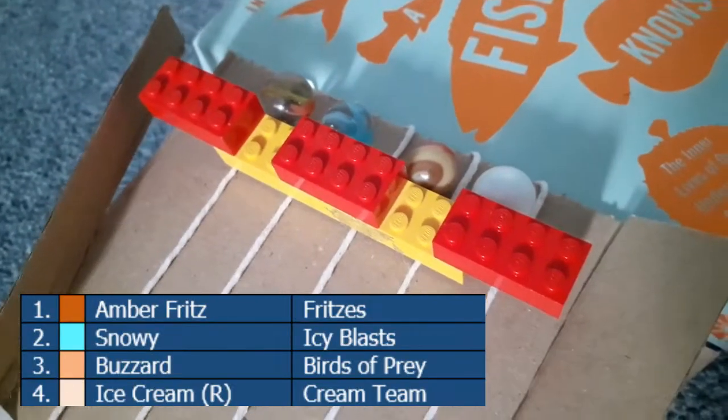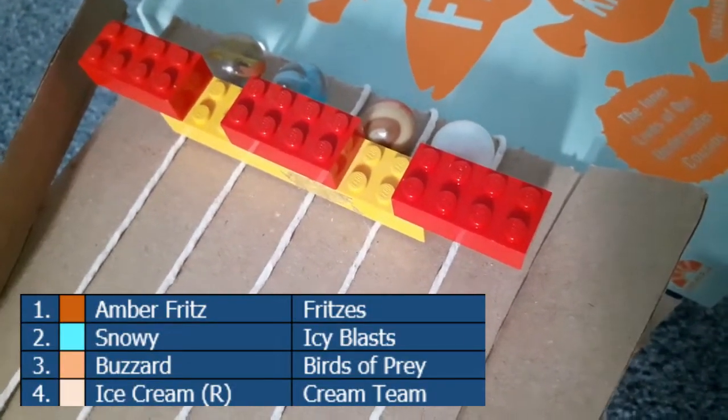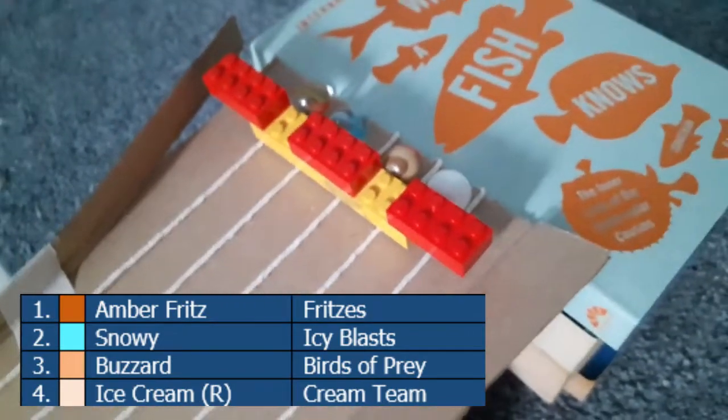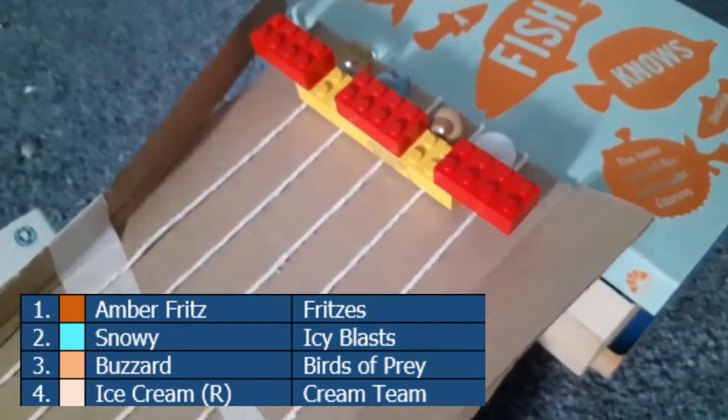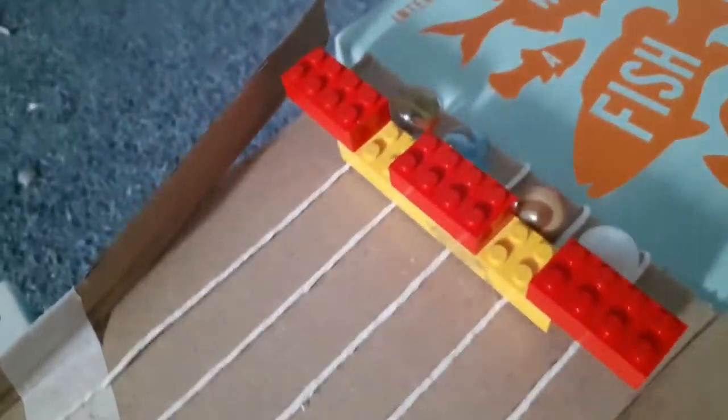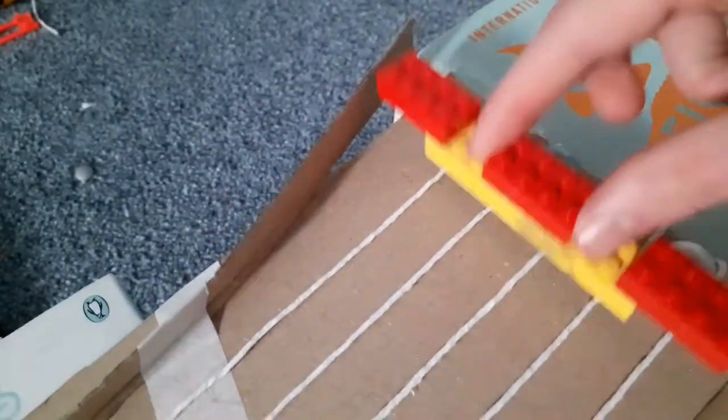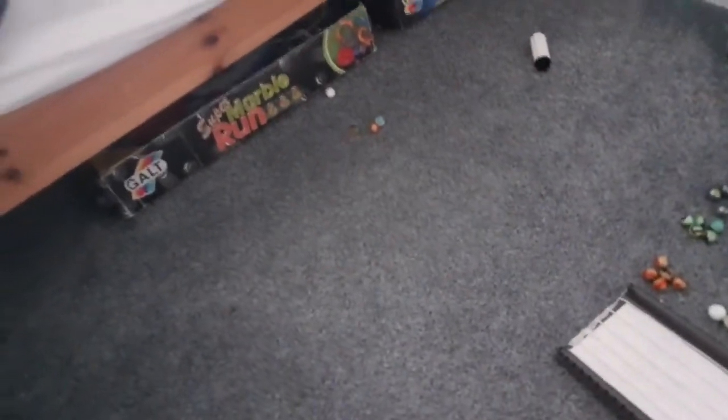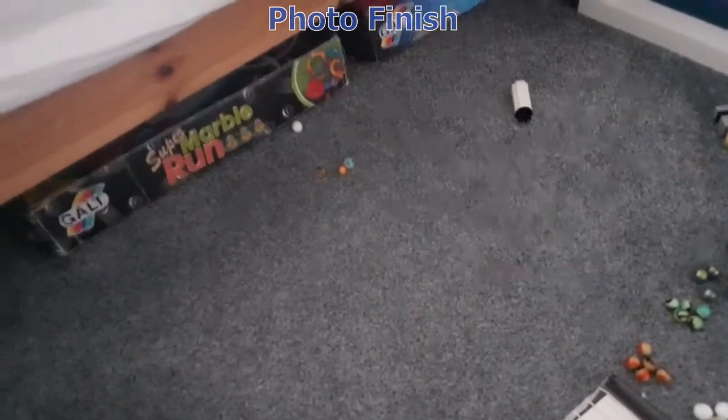Now we have Fritzers, Icy Blasts, the Birds of Prey, and the Cream Team. Cream Team have had 4th and 8th in the Sprint with Ice Cream, but the winner of the pre-qualifier Sprint, Snowy, is in here as well for the Icy Blasts. They're off, and it will be Birds of Prey who's going to get the win, actually. Not at all expected result. Let's look at the replay for 3rd there, didn't quite catch that.